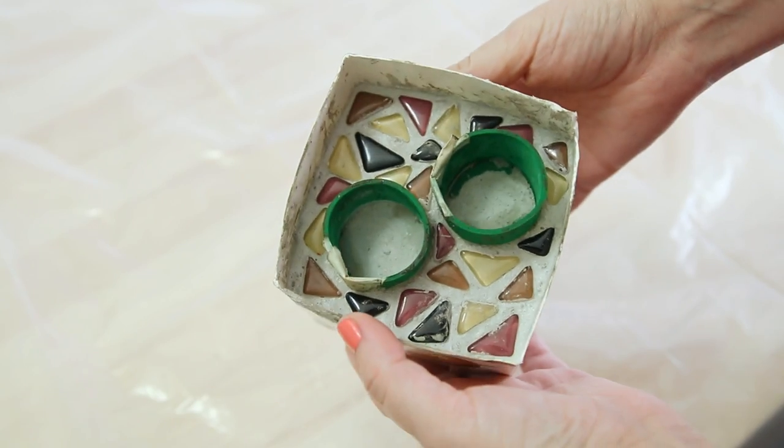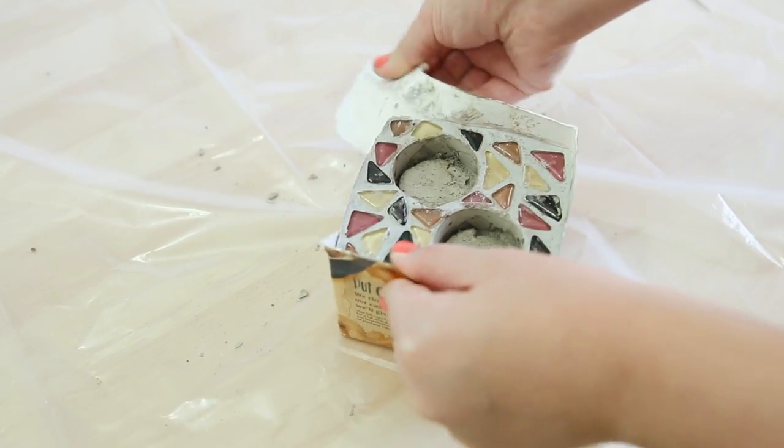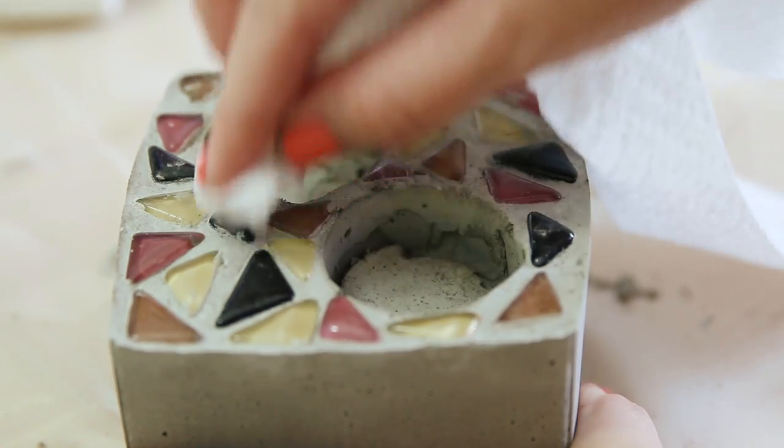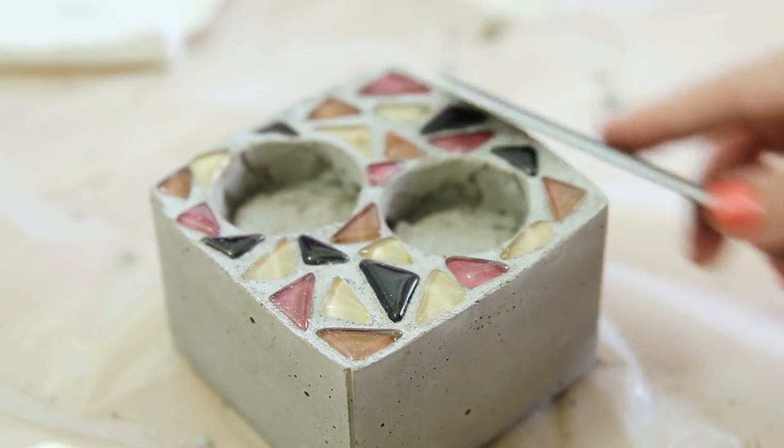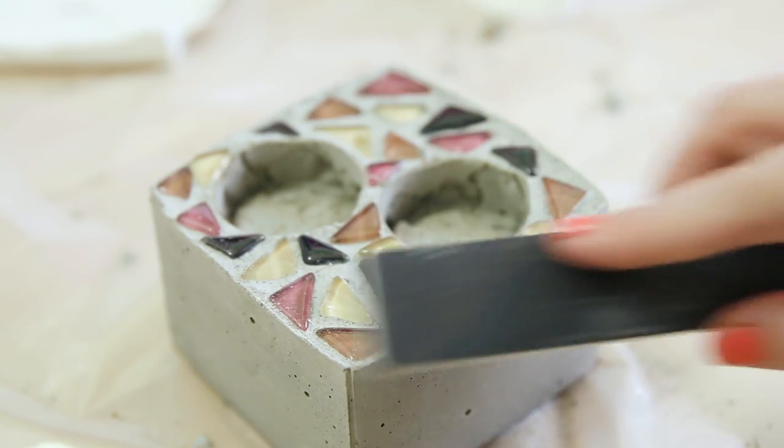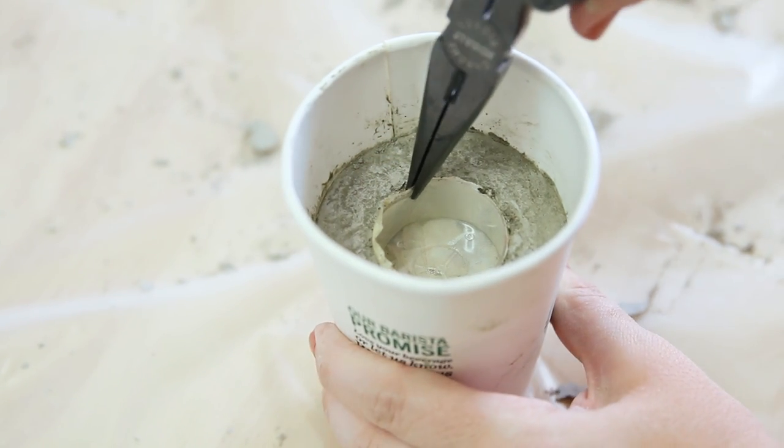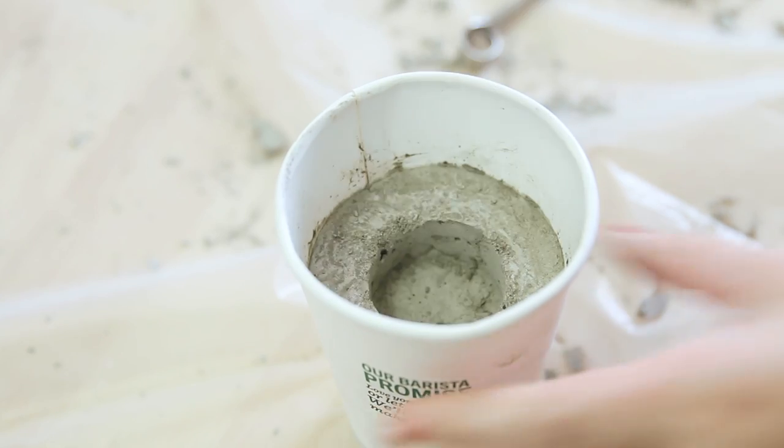After those are dry now it's time to reveal the final holder so I removed all of the molds. Wiped any cement haze from the glass tiles with a wet paper towel and filed off any rough sharp edges. The mold without craft foam was not as easy to remove so I had to use a pair of pliers to kind of twist it out.